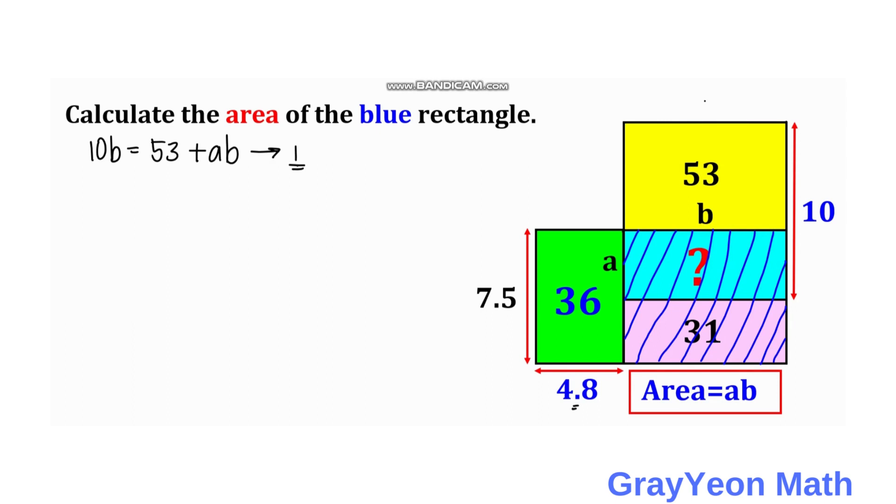Next thing we have to focus on the two rectangles below, the blue and the lavender rectangle. So again, we'll use the same procedure. We have 7.5 times this B, which is the length, and the sum of its parts. So the sum of its parts will be one part is 31, and the other part is AB. And we call this as equation 2.